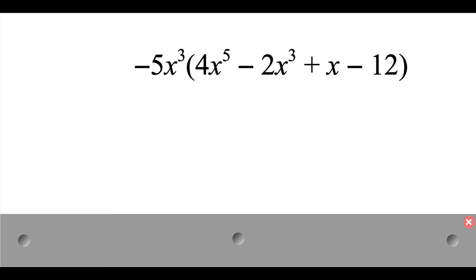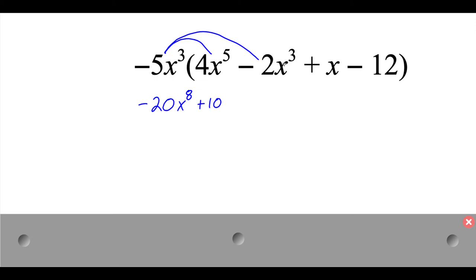Taking a look at this example, we've got negative 5x cubed times 4x to the 5th minus 2x cubed plus x minus 12. Again, I'm going to use my distributive property. So I'm going to take the negative 5x cubed and multiply it to the 4x to the 5th. Negative 5 times 4 is negative 20. x cubed times x to the 5th — if I add those exponents together, I get x to the 8th. Then if I take the negative 5x cubed times the negative 2x cubed, negative 5 times negative 2 is positive 10. And then x cubed times x cubed — I add those exponents together, so I get x to the 6th.